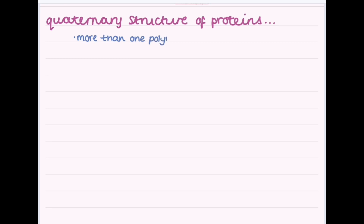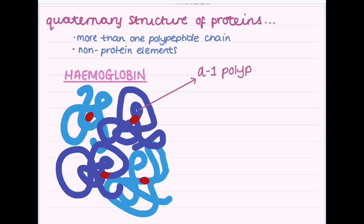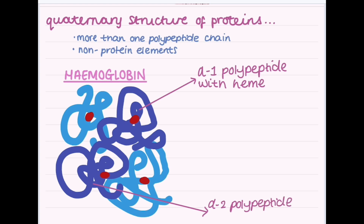Finally, we move on to the quaternary structure of proteins. Not all proteins have a quaternary structure — some stop at tertiary — because the quaternary structure refers to the interaction of two or more polypeptide chains tightly arranged together. A well-known example of a protein with quaternary structure is hemoglobin, the oxygen-carrying molecule inside red blood cells. Hemoglobin is made up of four polypeptide chains: two alpha chains and two beta chains. Each polypeptide chain is also associated with a non-protein element called a heme group, which has a ferrous iron responsible for loading oxygen.